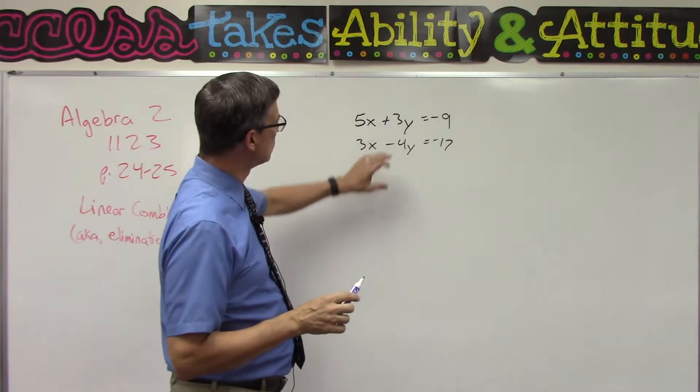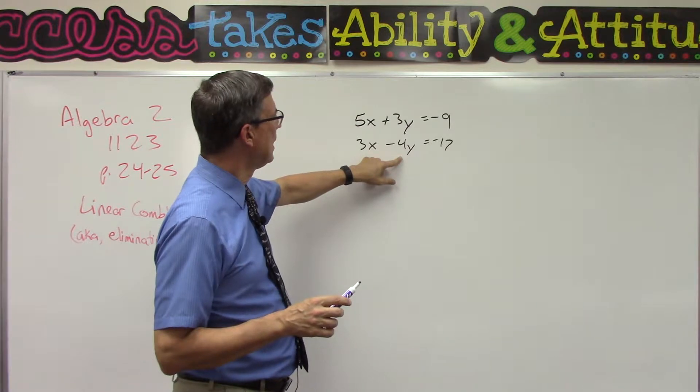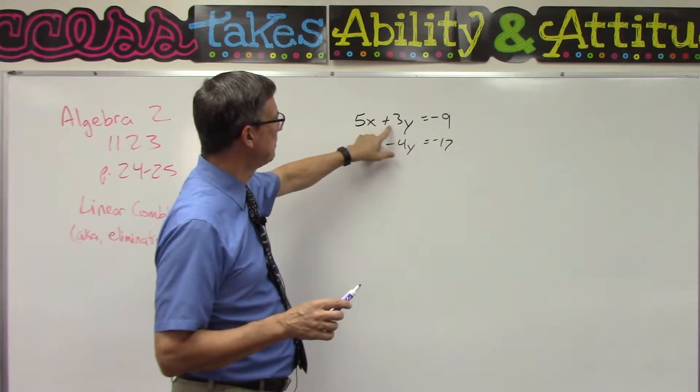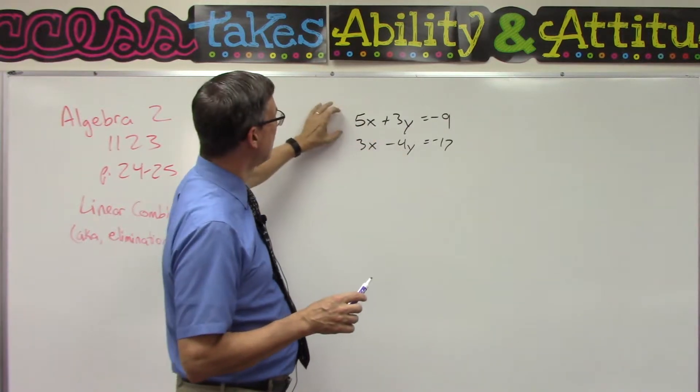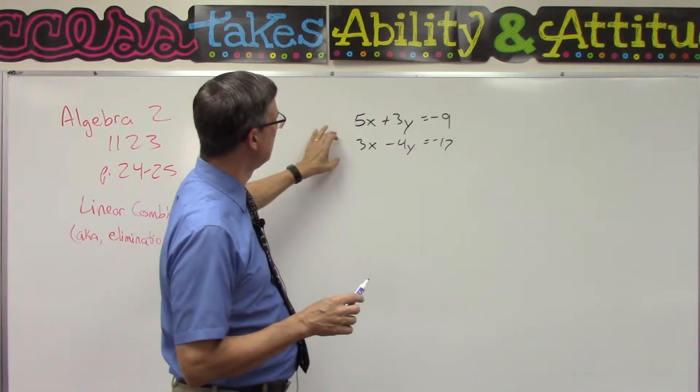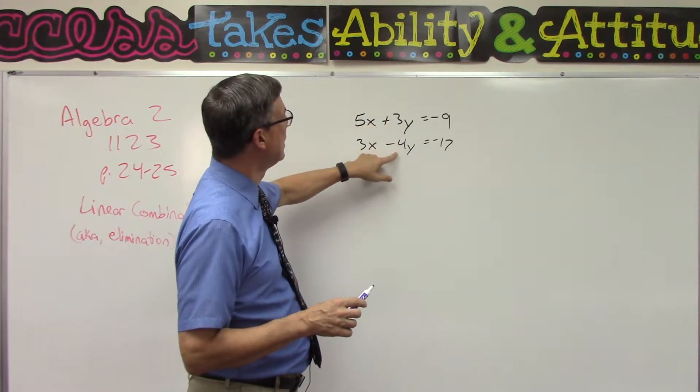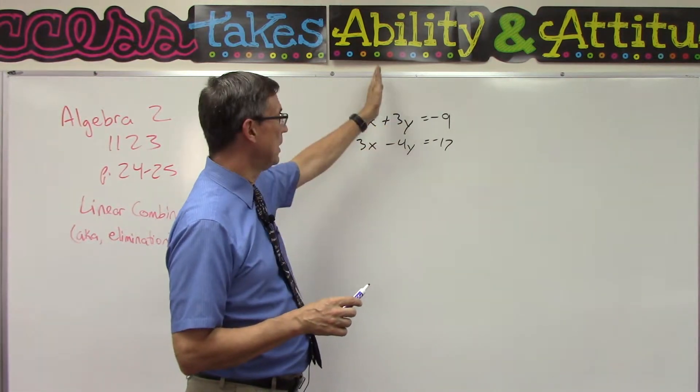Because this one's positive, this one's negative. So if I multiplied everything in this equation by 4 and everything in this equation by 3, then this would become 12y and this would become -12y, and then they would cancel. But I'm going to do it a little different.